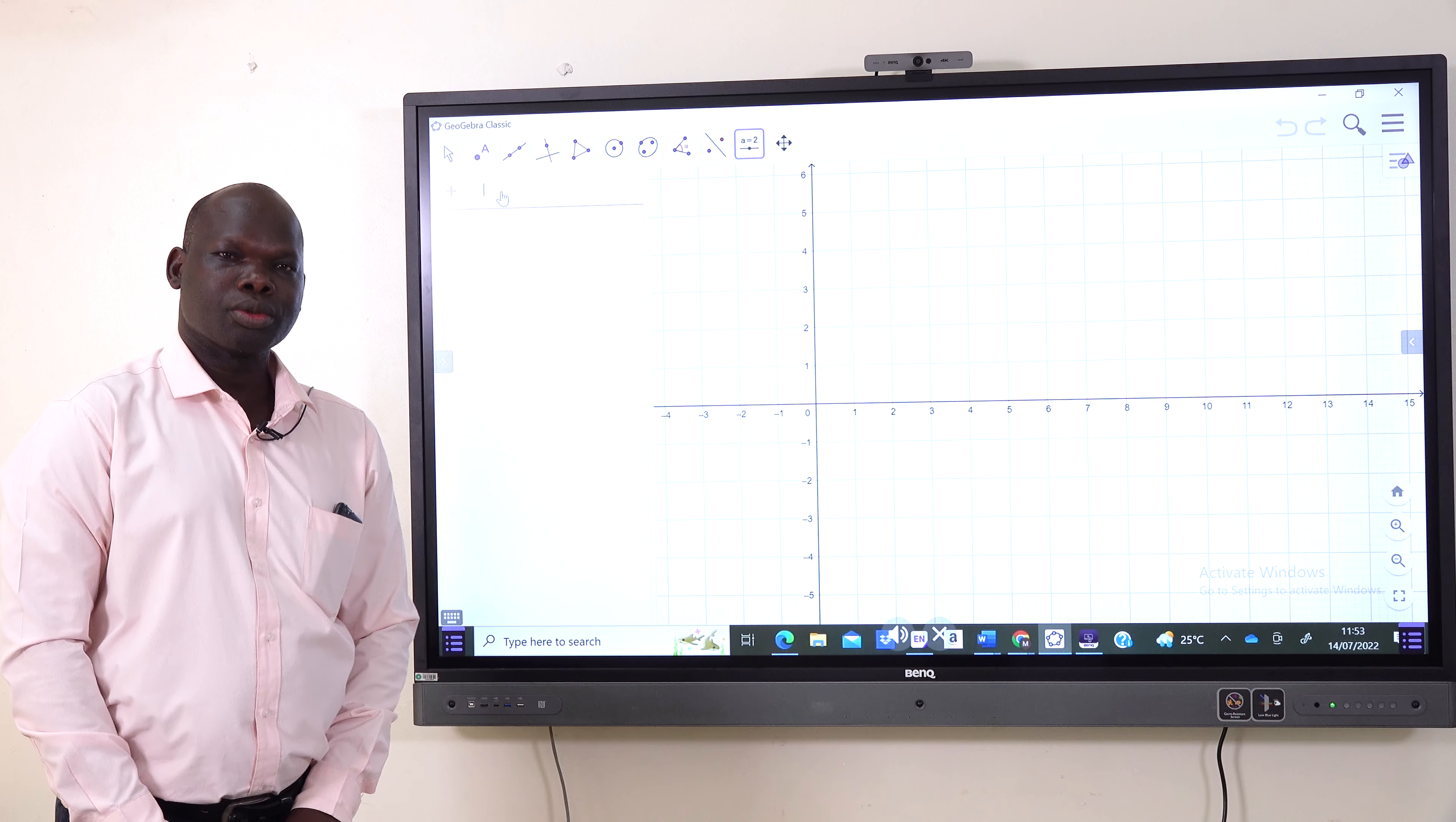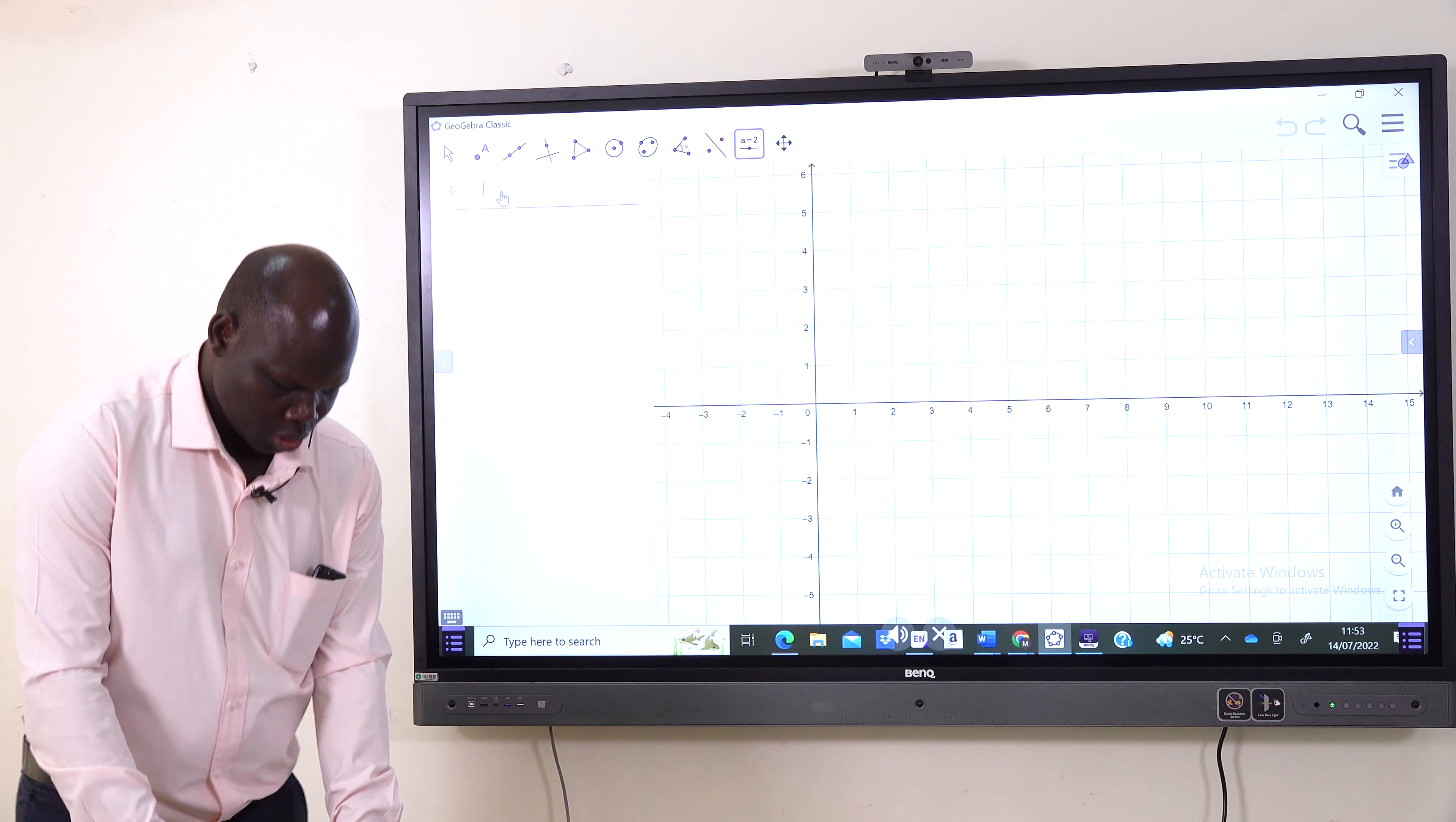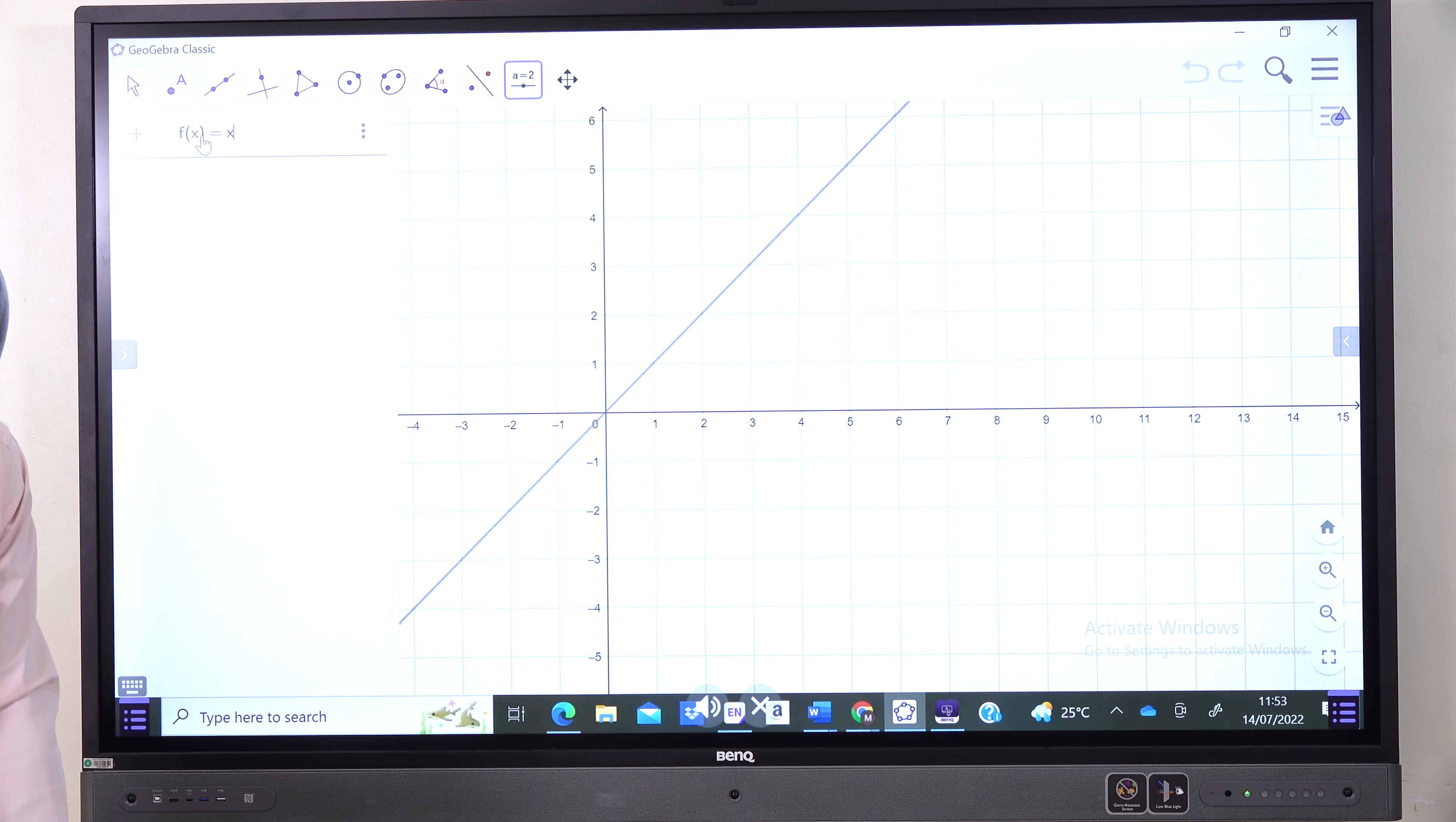I'm going to handle how we can use GeoGebra to find the inverse function of a given function. For example, I'm going to take you through finding the inverse function whose function is f of x, as we are seeing, equals x squared.